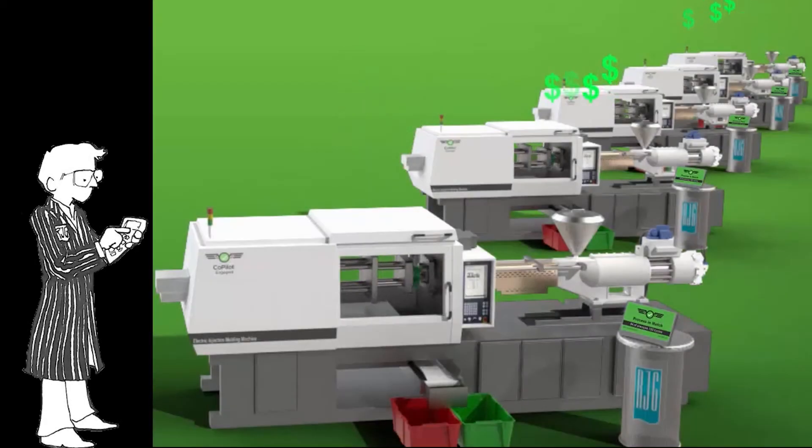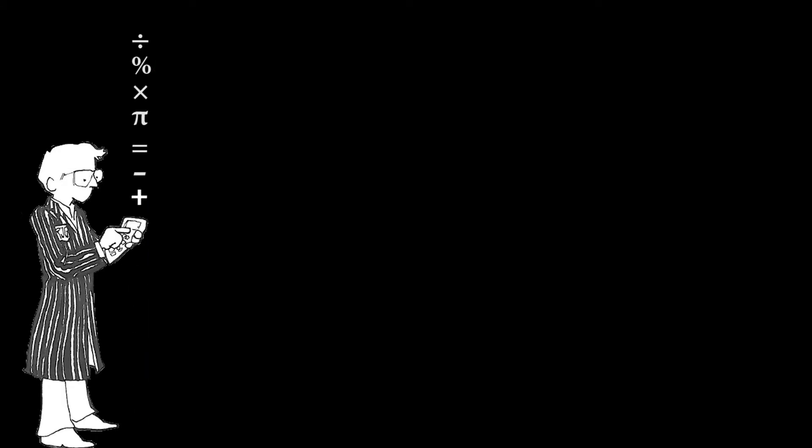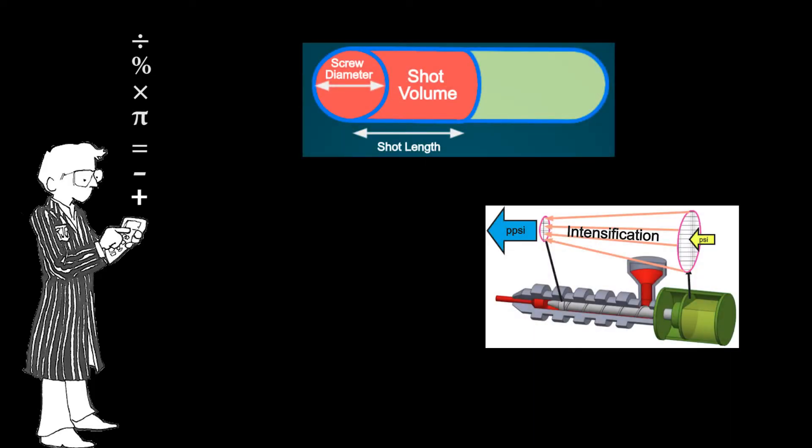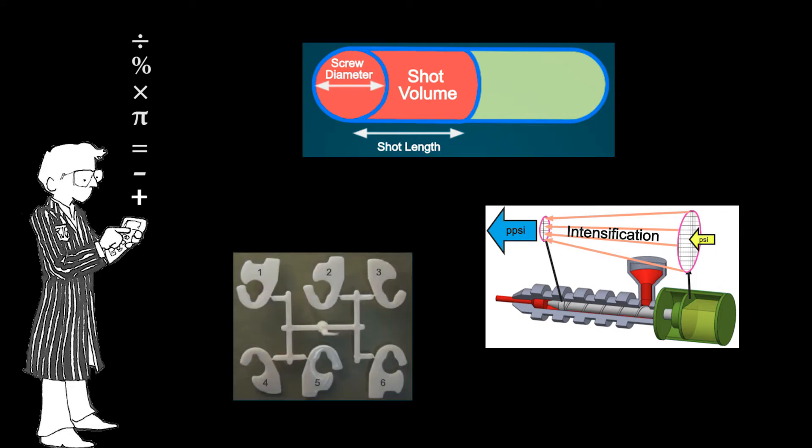To systematically optimize processes in plastic injection molding, molders need math. In order to accurately calculate things like shot volume, intensification ratio, or average part weight